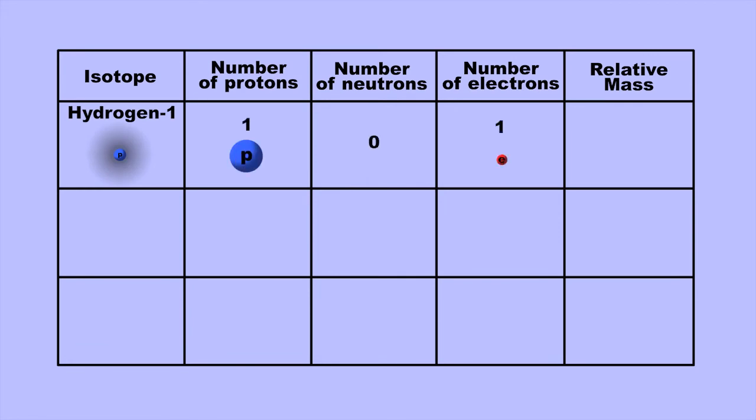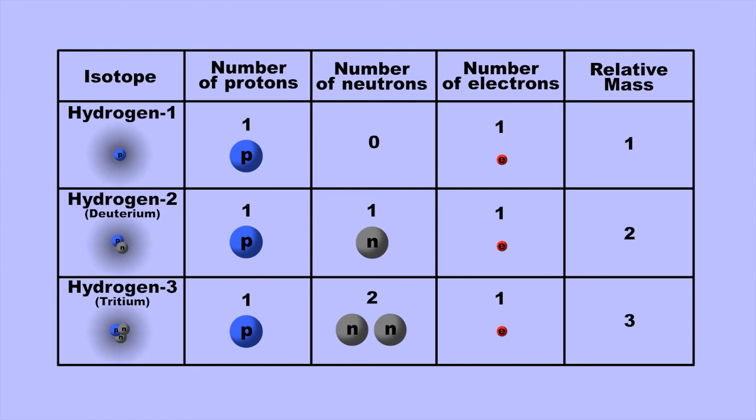By varying the number of neutrons contained in the nucleus of an atom of a particular element, you obtain different isotopes of that element.